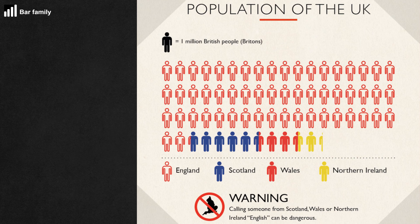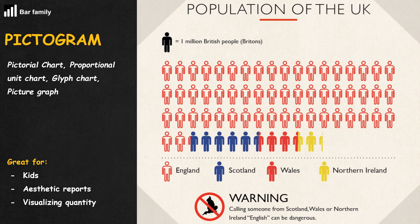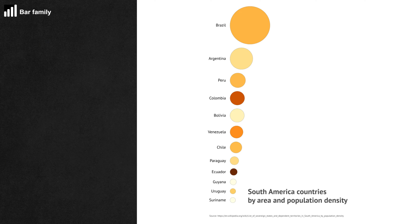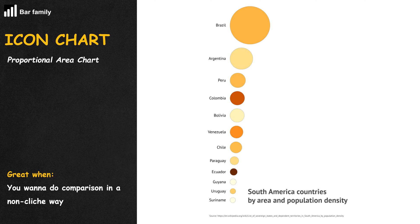When the data designer has kids, he may turn the bar or column chart into a pictogram, where each data point is represented by a small square, image, or a sticker. If we just use sizes instead of the number of squares to represent values, we have the icon chart.